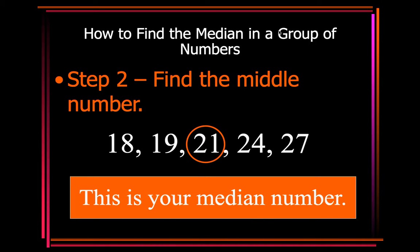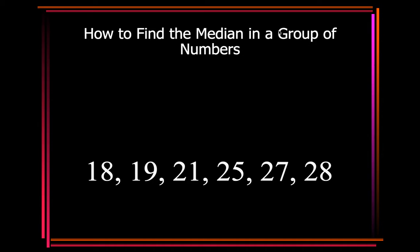And therefore, the 21 is your median number. All right, so how to find the median in a group of numbers. Again, list them least to greatest, which is done. Cross off one end to the other.